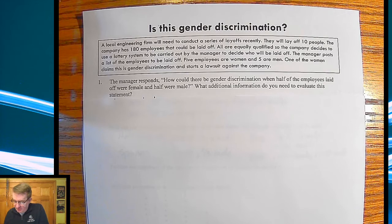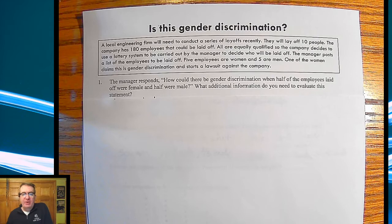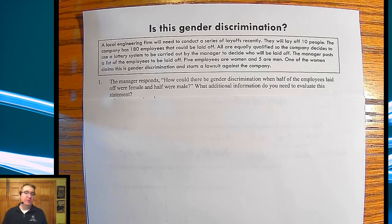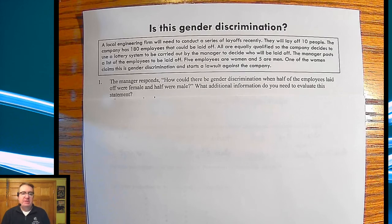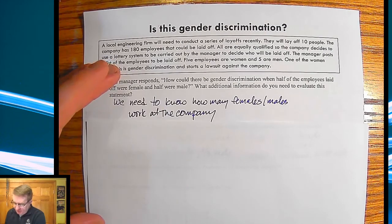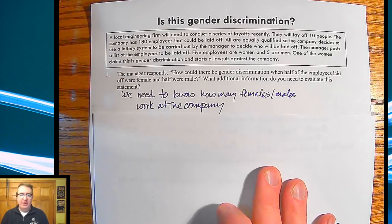So first of all, the manager comes back and says, how could there be gender discrimination when half the employees laid off were female and half the employees were male? What additional information would you need to know to make this work? Take a second, think about it. Hopefully you came up that you needed to know how many females there were in the company, how many males were in the company, because obviously 50-50 is going to be different. We need to know how many females or males are working at the company.